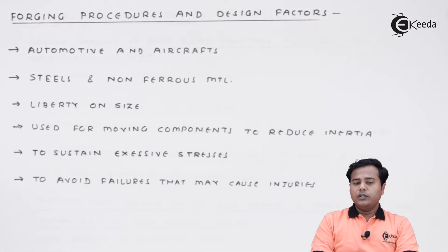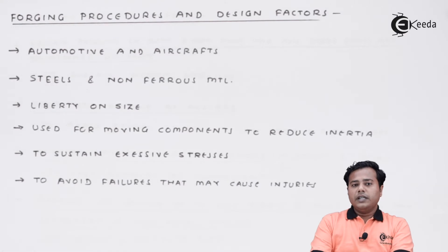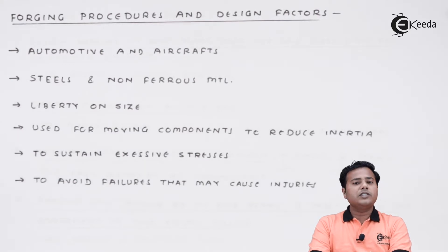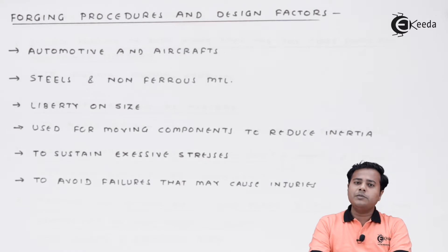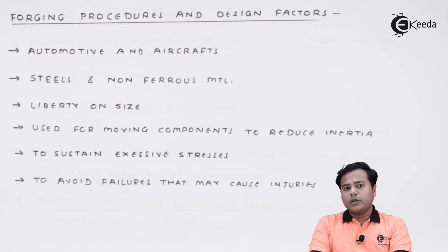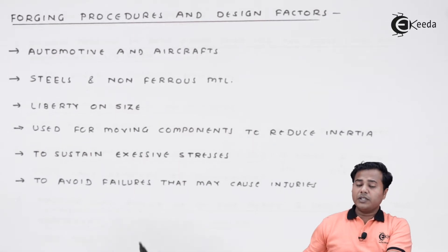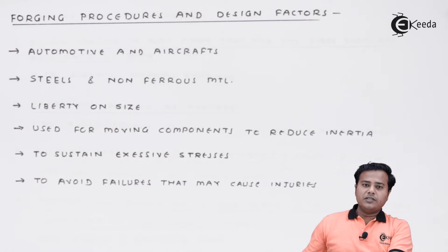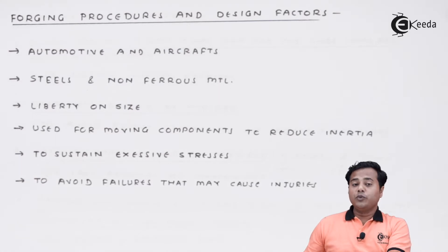The next thing is to sustain excessive stresses. Due to the highly effective procedure of forging, the concentration of stresses is highly reduced, which helps in the manufacturing of such products. Last but not least, forging is used to avoid failures that may cause injuries. Generally injuries may be caused by moving parts, and to produce them safely, forging is generally used.